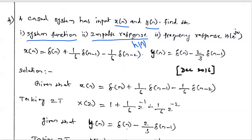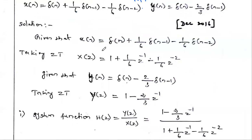But here the input value x(n) and output value y(n) are given, and from that we have to find the three things. So this problem is somewhat different. Anyway, the first thing is to write x(n).